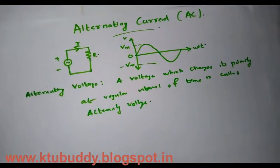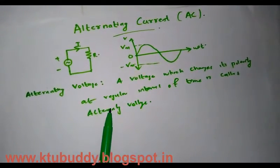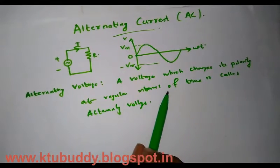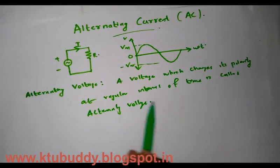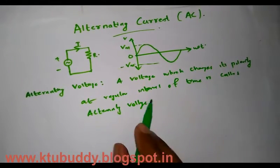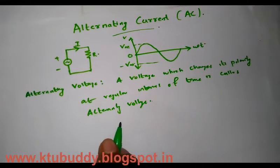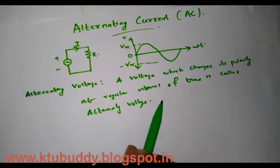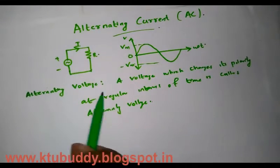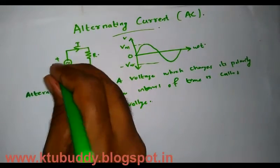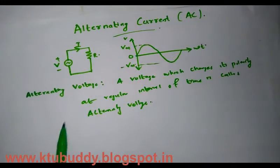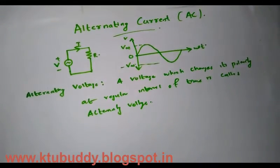Unlike DC voltage, alternating voltage changes its polarity or direction at regular intervals of time. When an alternating voltage V is applied to a closed circuit consisting of a resistor as shown, a current I will flow through the circuit.